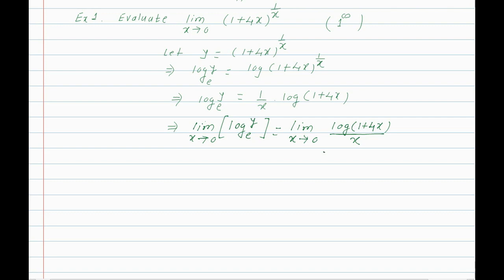Let us check the form on the right-hand side. As x tends to 0, log(1 + 4·0) = log 1 = 0 in the numerator, and the denominator x tends to 0 as well. The actual form is 0 into infinity, which we have converted to 0/0. We apply L'Hôpital's rule to evaluate 0/0.